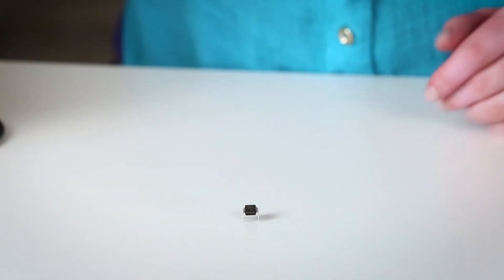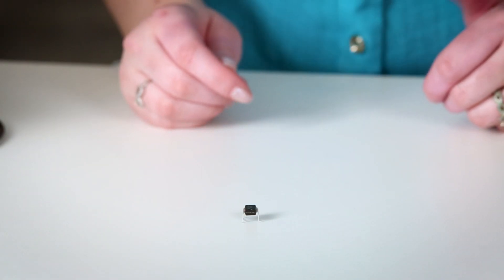One of the first ICs or integrated circuits you'll probably come across as a budding electrical engineer is this little guy. It's a 555 timer.